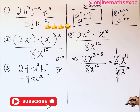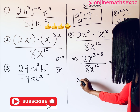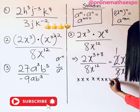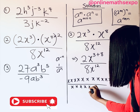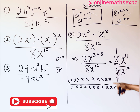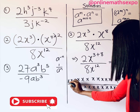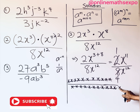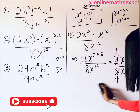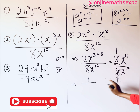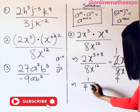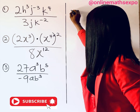Simplify the coefficients: 2 over 8 reduces to 1 over 4. For the x terms, x to the power of 11 over x to the power of 12 — 11 x's cancel from numerator and denominator, leaving 1 x in the denominator. So the final answer is 1 over 4x. That is your simplified answer for question 2.